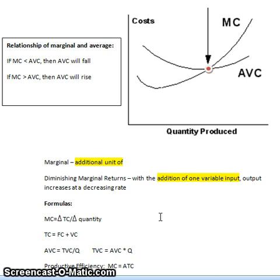So with the addition of one more worker, output is increasing at a decreasing rate. So your total product or your total output is going up with this additional worker, but the rate of return from that worker is not as large as what it was when you had hired the person before that.